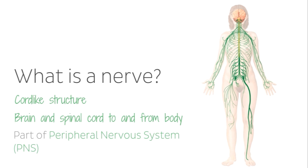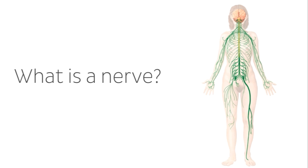A nerve acts much like a telephone cable, carrying messages along a wire, with its central communication sensor in a cell body, or neuron, in the brain and the spinal cord. Its affected organ or structure is located in the periphery.